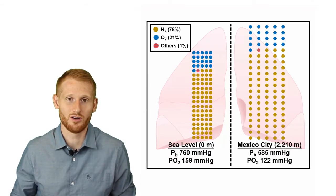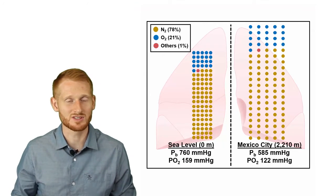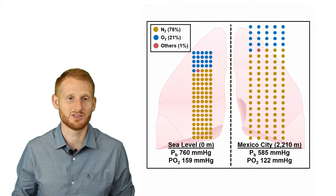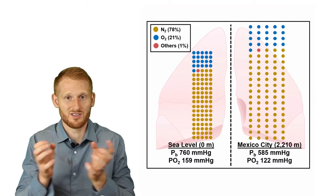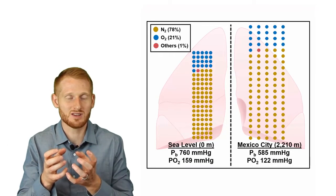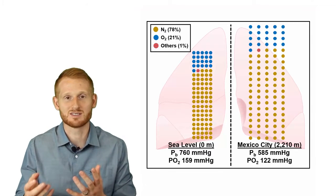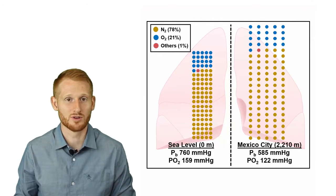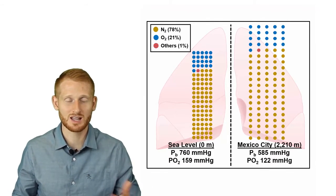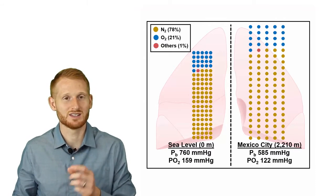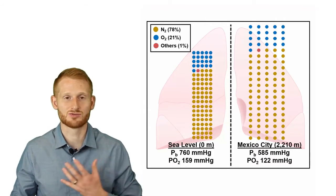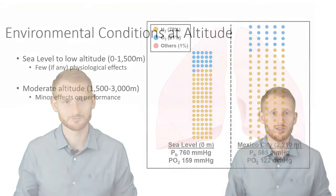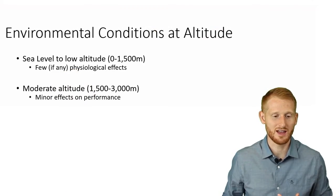Some sports actually see a small improvement at altitude because the air molecules are less densely packed, meaning there is less air resistance. A sport like the long jump in track actually sees a very small improvement in performance because there's less drag from the air around you.